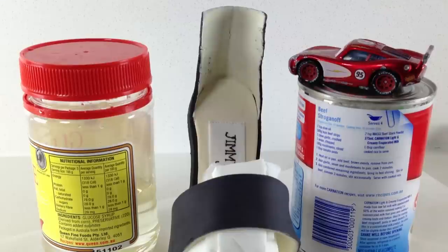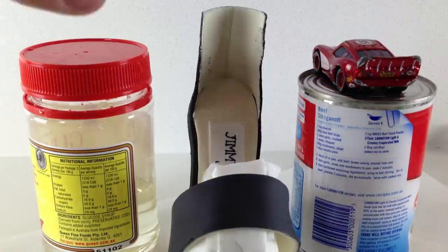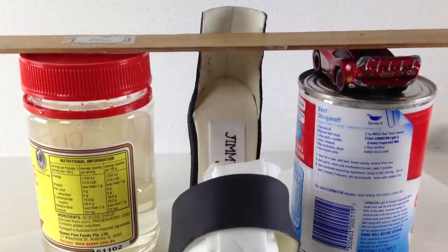Carefully remove the back support and then stack up some items to make supports of equal height to balance a ruler on. This is to hold the ankle strap in place while it sets.